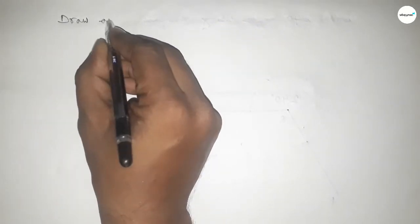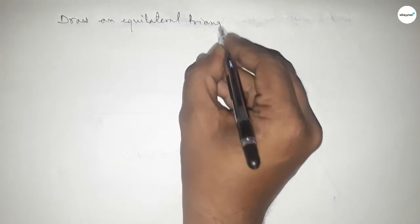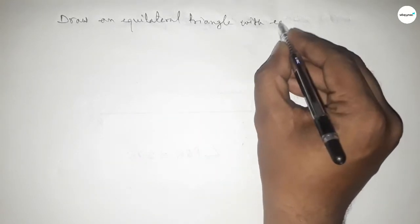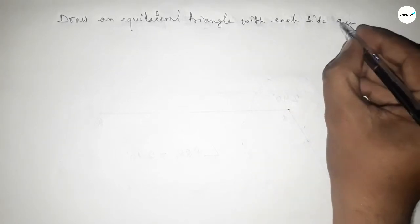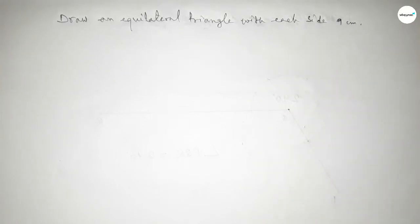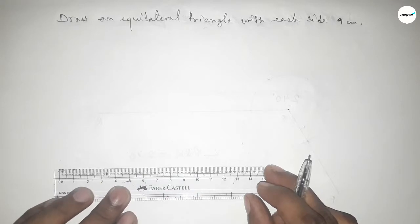Hi everyone, welcome to SSR classes. Today in this video we have to draw an equilateral triangle with each side 9 centimeters. So let's start the video. First of all, we have to draw a line of length 9 centimeters.